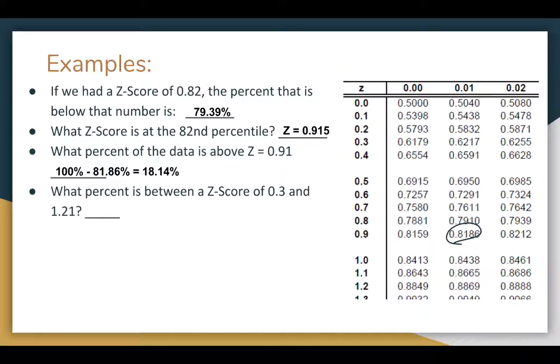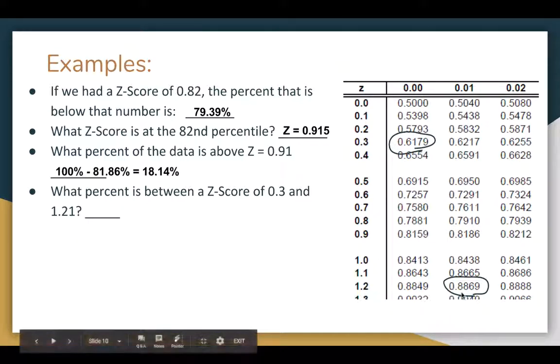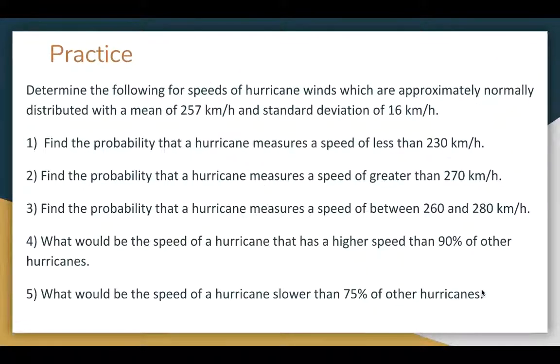And then between 0.3 and 1.21, we can look up 0.3 and 1.21, 0.30, 1.21. And so between that, so if there's 62% below this one and 89% below this one, if you subtract that, there's 27% between.